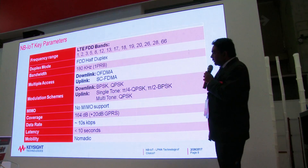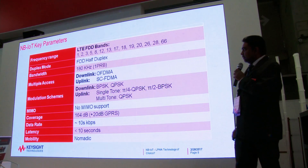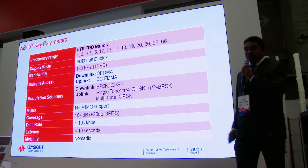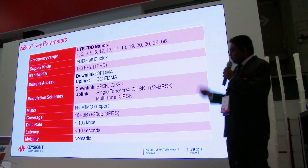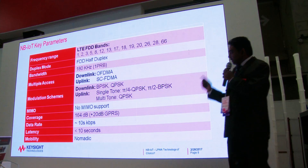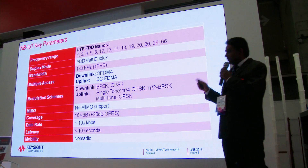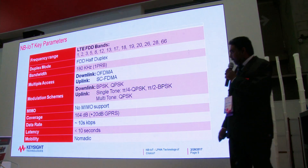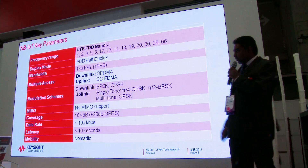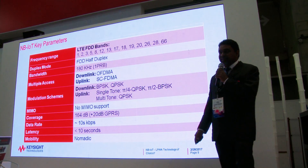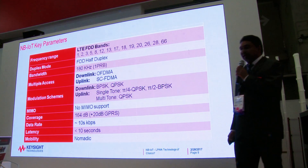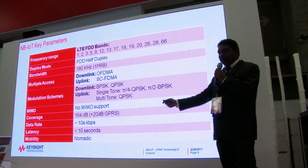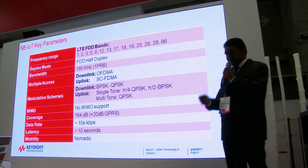Multiple access and modulation schemes are similar to LTE. There is no MIMO — just a single link. The coverage is enabled by the 164 dB NB link budget. Data rates are in the range of tens of kilobits per second, latency is less than 10 seconds, and mobility is nomadic without handover — only cell reselection is allowed.